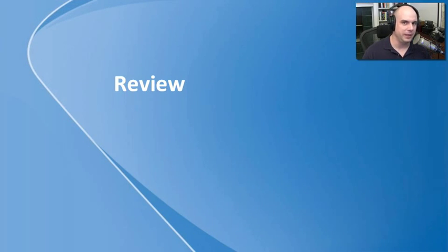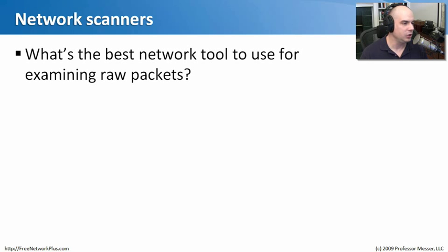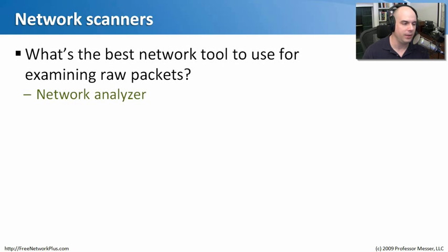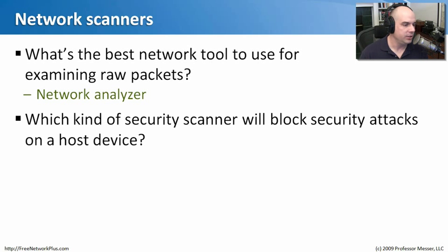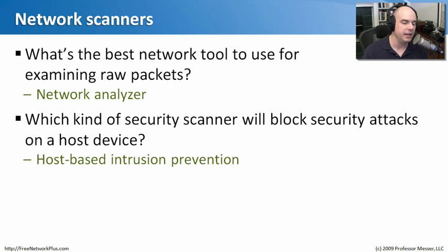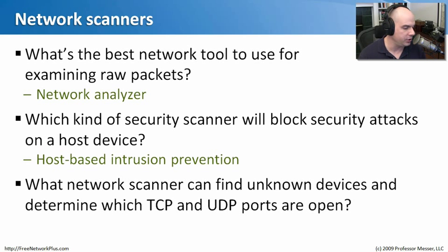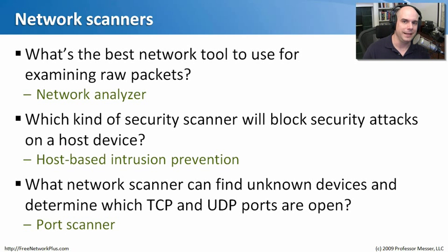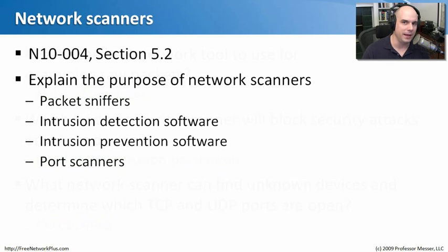Now that we've scanned our network in so many different ways, let's review. First question: what is the best network tool to use for examining raw packets? We used Wireshark — so that must be a network analyzer. Second question: what kind of security scanner will block security attacks on a host device? If we're blocking it and it's on a host machine, it must be a host-based intrusion prevention system. Last question: what network scanner can find unknown devices and determine what TCP and UDP ports are open? That is a port scanner — we ran an Nmap scan to demonstrate that.